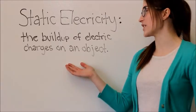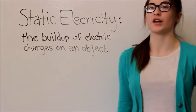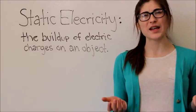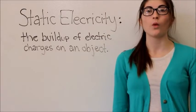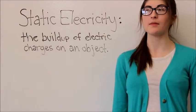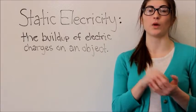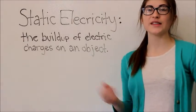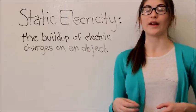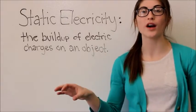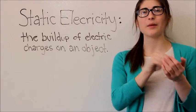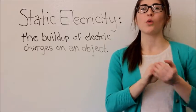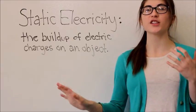Static electricity is the buildup of electric charges on an object. Now what does that mean? Well, when something builds up, that means a lot of it is stuck in one place. So in this case, that means when electrons transfer from one object to another, they get built up on one object. Which means that the charges are different.